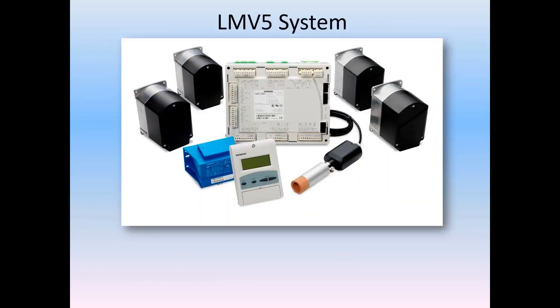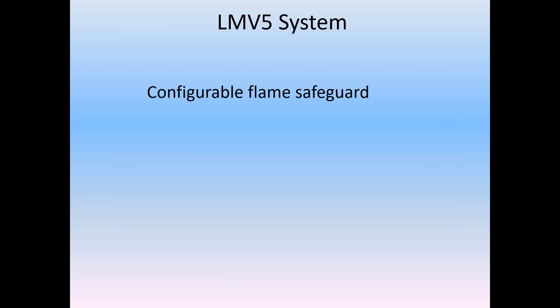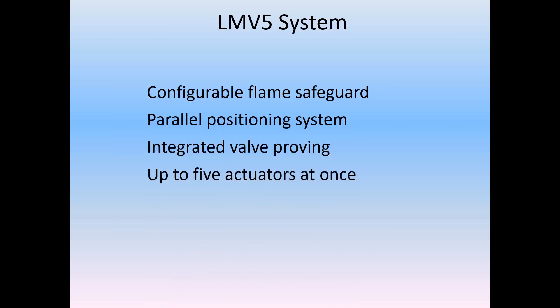The LMV5 system, shown here, has primary features that include a highly configurable flame safeguard, a parallel positioning system for fuel-air ratio control and integrated valve proving, and up to five actuators working at once for fuel, air, an internal PID controller, as well as optional O2 trim and variable frequency drive control.